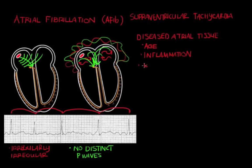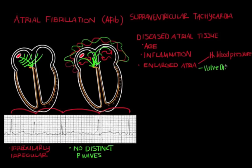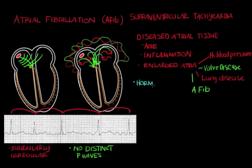Anything that causes atrial enlargement also increases risk, including years of high blood pressure, certain types of valve disease like mitral stenosis, certain types of lung disease, and previously having AFib. Other things that increase your risk include certain hormonal abnormalities — specifically thyroid hormone — and years of alcohol abuse.